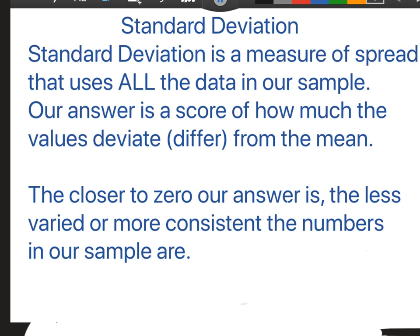The closer our answer is to zero, the less varied our numbers are. The bigger the number, the more varied it is. So the closer our answer is to zero, the less varied or more consistent the numbers in our sample are.